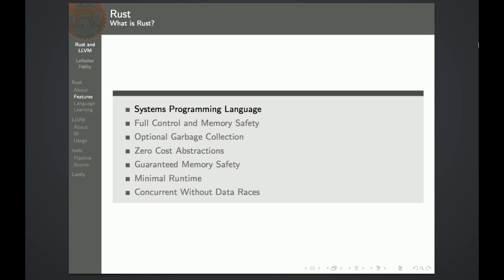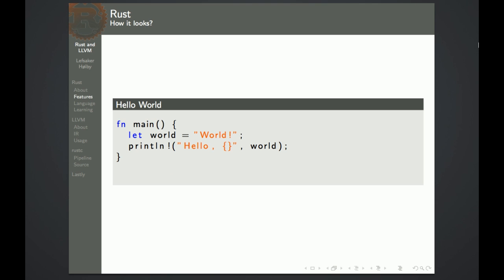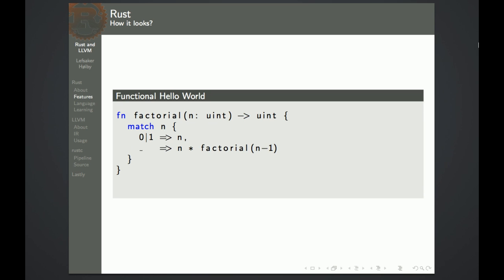First we're going to show a basic example of code. This is the standard hello world. We have a main function and the curly braces that we're all used to. Print line here is a macro, and macros are specified with the exclamation mark. Since it's multi-paradigm, we can also use this as a functional language. This is the factorial, and we have match expressions. The last expression in every function is also the one that's returned from the function.